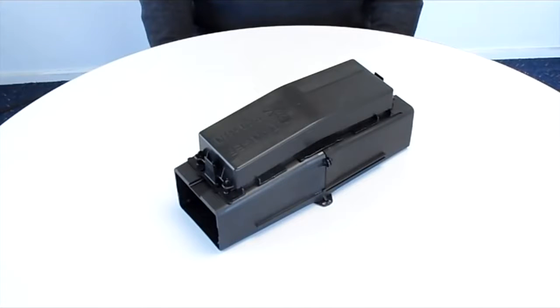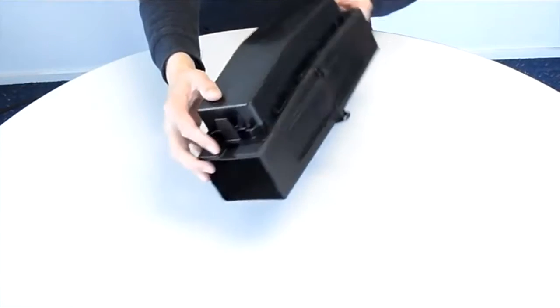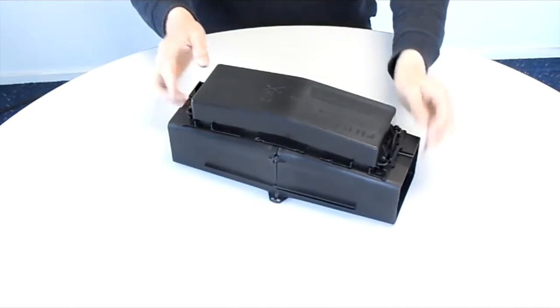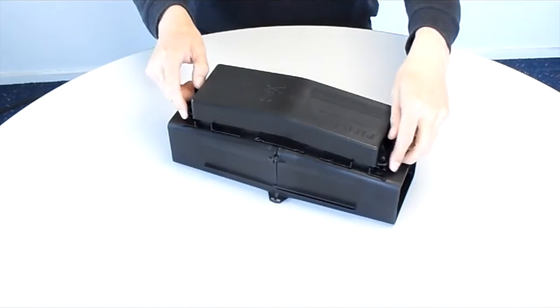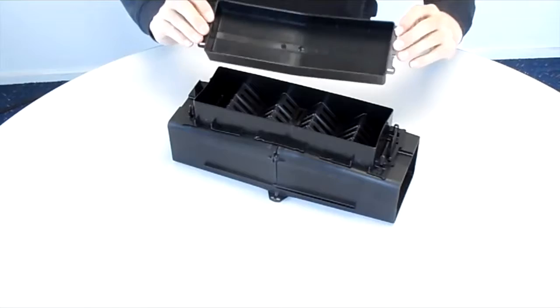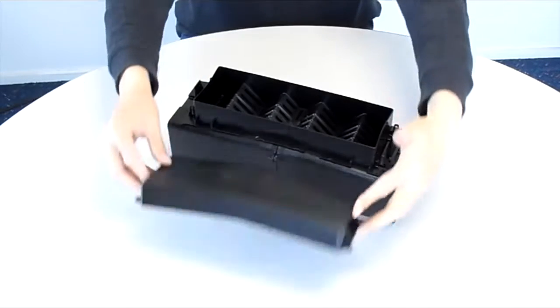To open the lid on your bait station, pull the latches at each end of the basket outwards and lift the lid. You will find the inside of the basket is slotted and it is through these slots that the rats feed on the bait.